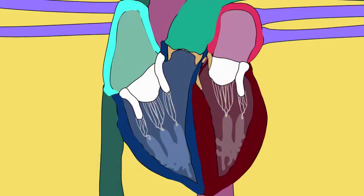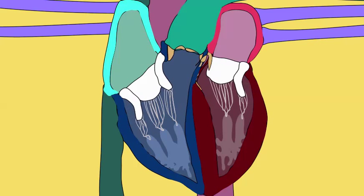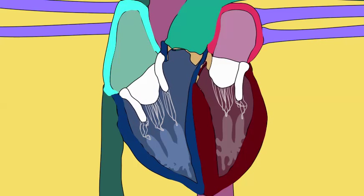To prevent this inappropriate flow of blood, there are valves. Valves are essentially doors which close when blood is attempting to go the wrong way.